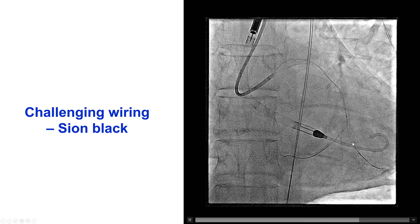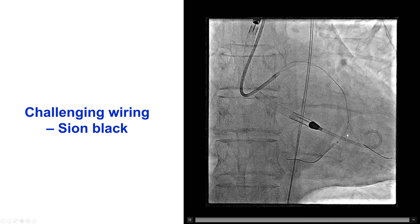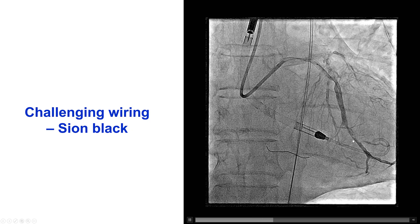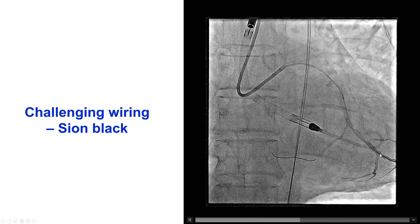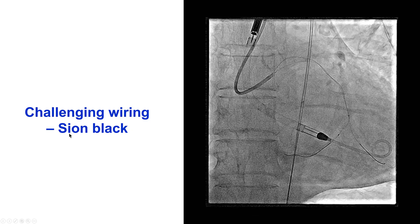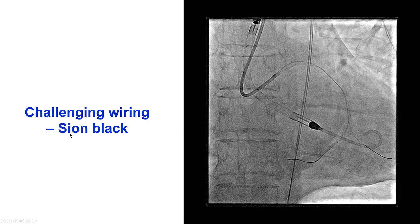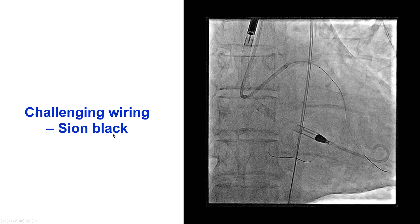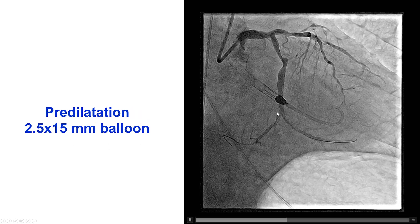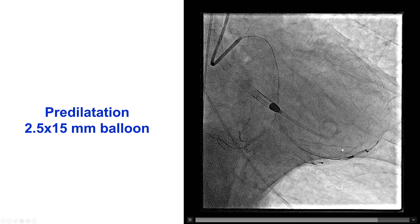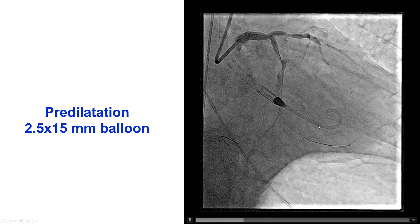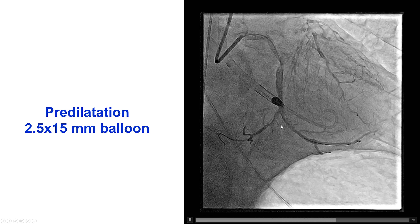The culprit again seemed to be the second obtuse marginal and distal circumflex. We had some difficulty wiring, but we were able to advance a guidewire to both vessels using a polymer jacket, soft, deep, non-tapered C-on Black wire. We then did balloon predilatation, which restored flow in the second obtuse marginal, which was a fairly large branch.